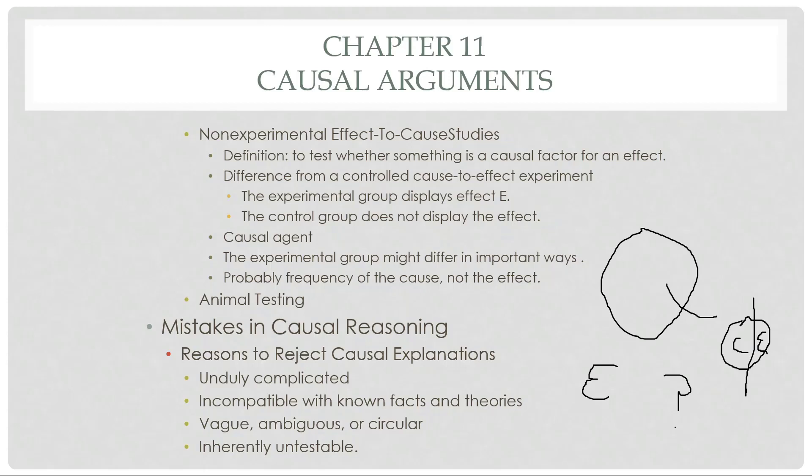Again, in terms of being complicated, maybe the complicated one is correct, and maybe someone has developed a new theory that will overthrow the old ones — but you need a significant amount of evidence for that. Being vague, ambiguous, and circular are always bad. Being untestable is always bad as well. Next time, we'll head on to look at some causal fallacies — ways one can go wrong in one's reasoning when engaged in causal thinking.